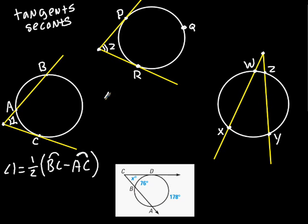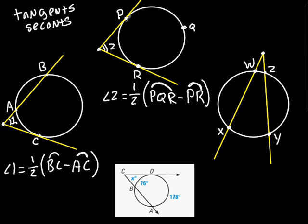For this angle 2, we'll end up equaling one-half times the PQR arc, this PQR outside, minus the arc PR, which is right in here. So this angle 2 will equal this whole thing minus this one.